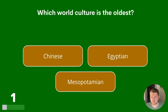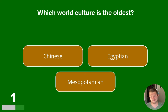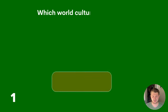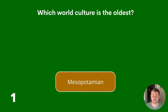Question 1. Which world culture is the oldest? Chinese, Egyptian or Mesopotamian? The answer is Mesopotamian.